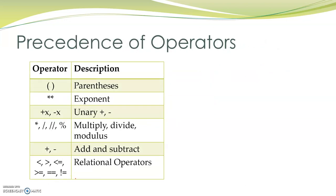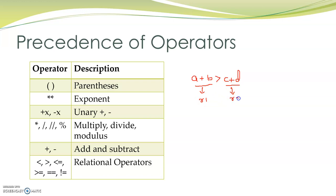Let's look at the precedence of relational operators compared to arithmetic operators. Relational operators have lower precedence over arithmetic operators. For example, in the expression a plus b greater than c plus d, there are both arithmetic and relational operators. As per the precedence table, all arithmetic operators have higher precedence, so first a plus b is evaluated to give result r1, and c plus d is evaluated to give result r2. After that, the statement becomes r1 greater than r2, which evaluates to either true or false.